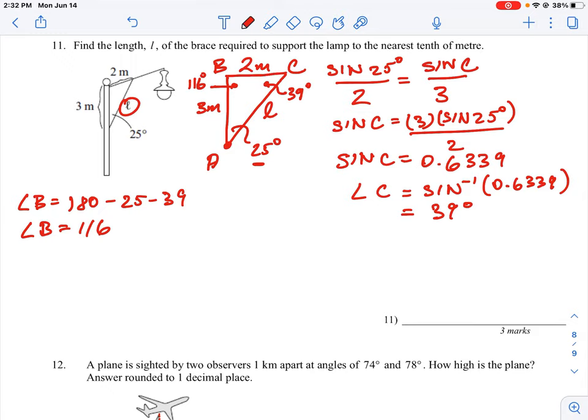So now that we have the angles figured out we can create a ratio to calculate L. I can say sine of 116 over L which is the side opposite. And now I have two different ratios that I can use. So we can use the original one here, sine 25 all over 2, and then I'm just going to cross multiply and work out my value for L.